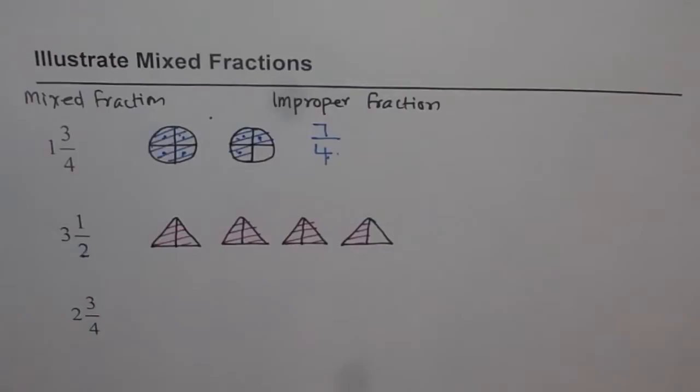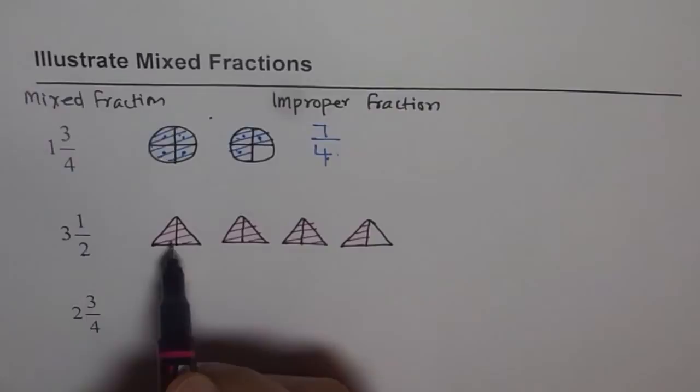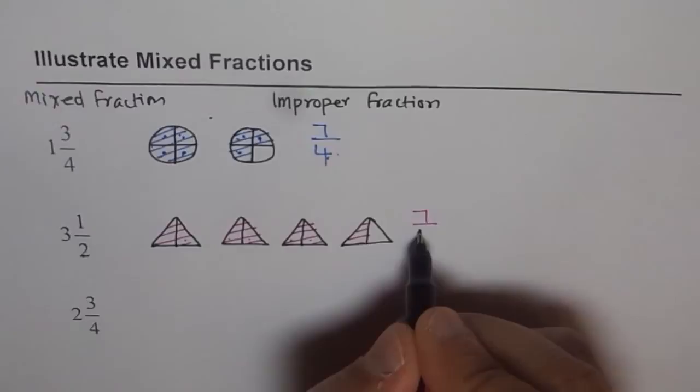Now, can I write this as improper fraction? Let me see. 1/2, 2/2, 3/2, 4/2, 5/2, 6/2, 7/2. So 7/2. That is good enough. So 3 1/2 is equal to 7 halves.